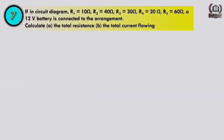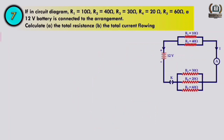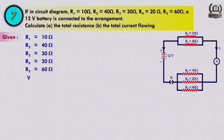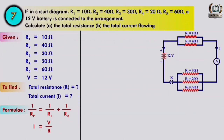Question number seven: R1 = 10 ohm, R2 = 40 ohm, R3 = 30 ohm, R4 = 20 ohm, R5 = 60 ohm, with a 12 volt battery. Calculate the total resistance and total current. We use 1/Rp = 1/R1 + 1/R2 and I = V/R.